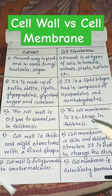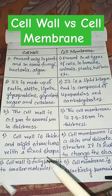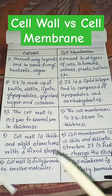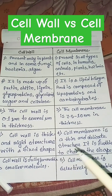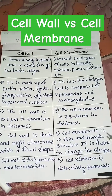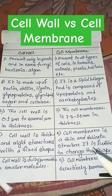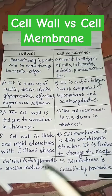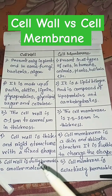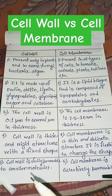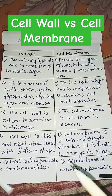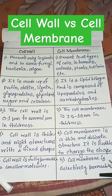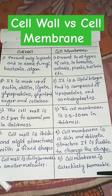The cell wall is 0.1 micrometer to several micrometers in thickness, but the cell membrane is 7.5 to 10 nanometers in thickness. The cell wall is a thick and rigid structure with a fixed shape, but the cell membrane is a thin and delicate structure — it is flexible.